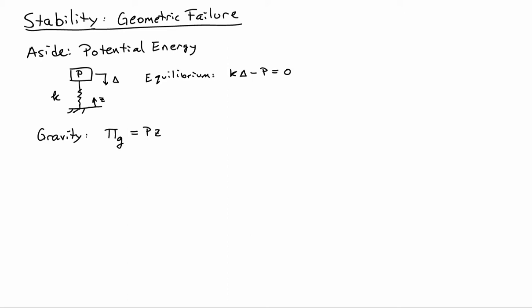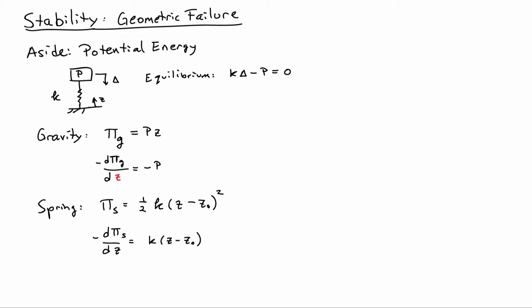We can re-express this equilibrium using potentials. The force on the spring is due to gravity, so the gravitational potential is simply p times z. The potential is defined such that its negative derivative gives the force — so the negative gradient of pi_g with respect to z gives minus p, with the minus sign because the force points downward. The spring also has a potential: the strain energy stored is one-half k times (z minus z-naught) squared. Taking the negative derivative of this potential with respect to z gives k(z minus z-naught), which is just k times delta — the spring force.